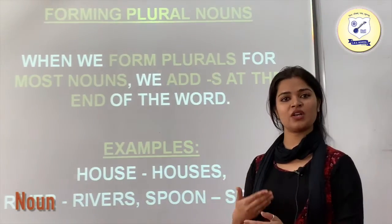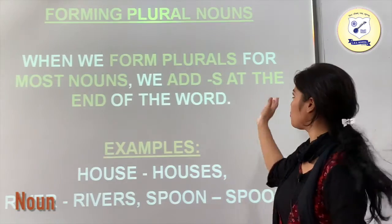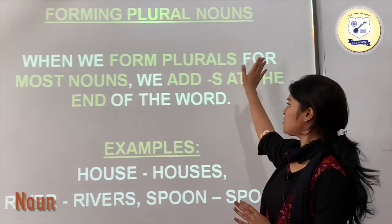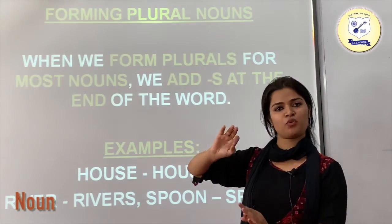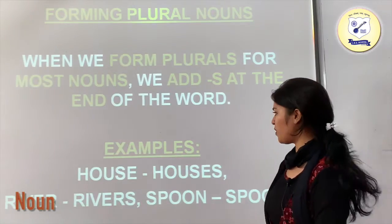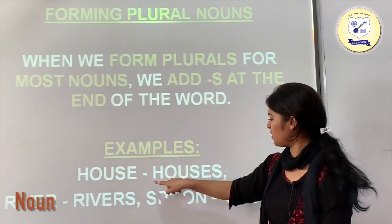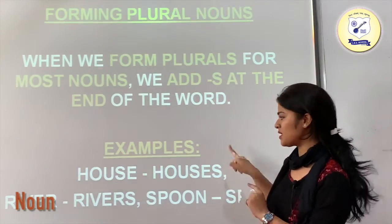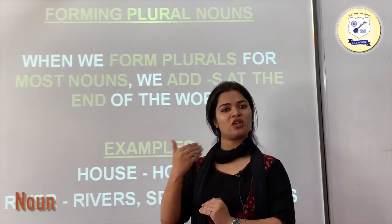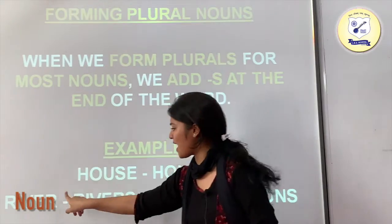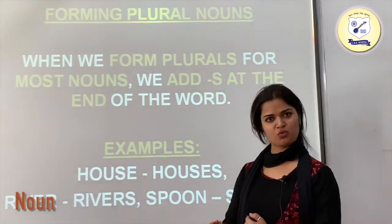Now, how to convert a singular noun into the plural form. First of all, for most nouns we add 's' at the end of the word. For example, house becomes houses, river becomes rivers — I just put 's' at the end. Spoon becomes spoons. So for most words, just add 's' at the end to make them plural.